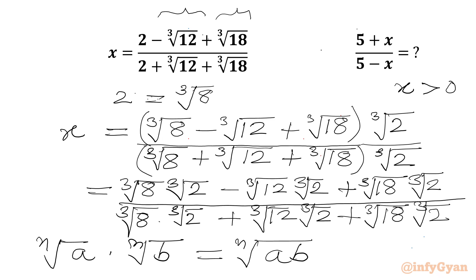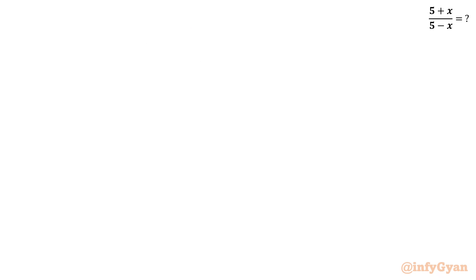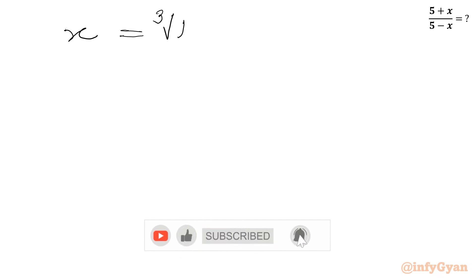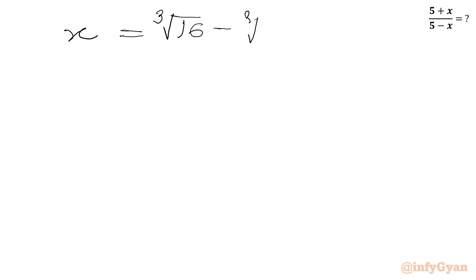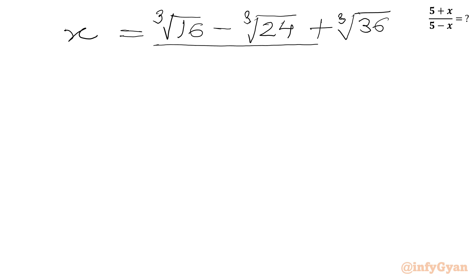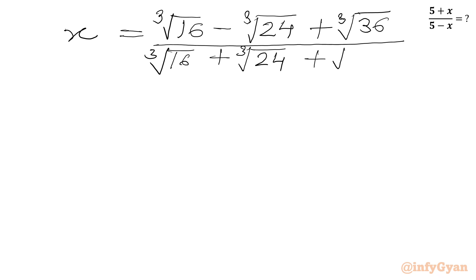Using the radical property that the nth root of A times the nth root of B equals the nth root of A times B, we can write cube root 24 and cube root 36 in the numerator. So x equals (cube root 16 minus cube root 24 plus cube root 36) over (cube root 16 plus cube root 24 plus cube root 36).